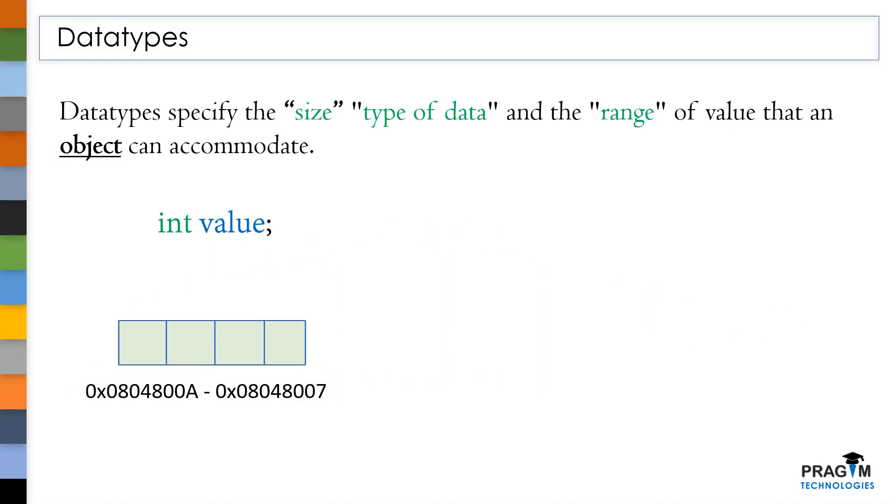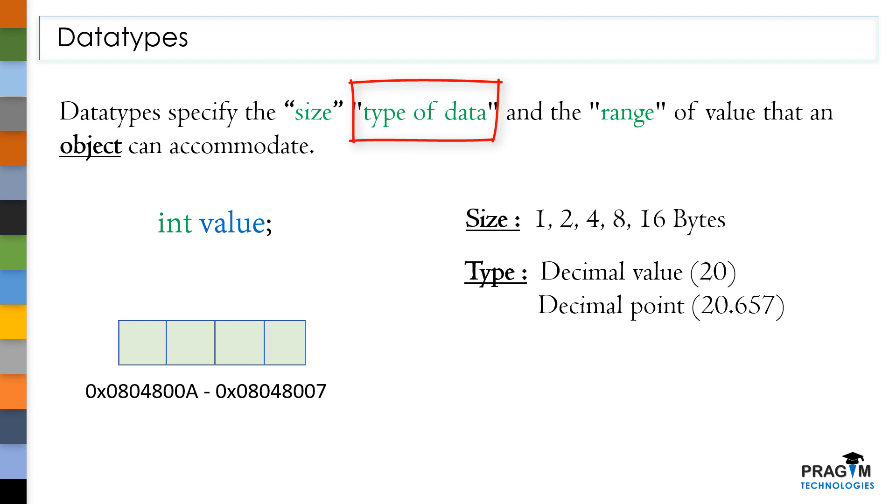Now, this data type specifies how much size should be allocated for this object, whether 1 byte or 2 byte or 4 or 8 and so on. And what type of data that an object can store, whether it is a decimal or a decimal point data. In computer, the way how decimal point values will get stored is completely different when compared to decimal values because decimal point values follow IEEE 754 floating point standard to store values in binary format. Let's don't worry about this right now. You will understand this clearly while going further. And finally, we have the range.